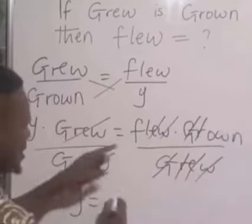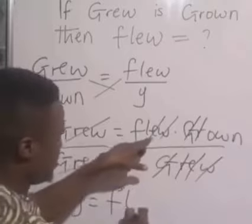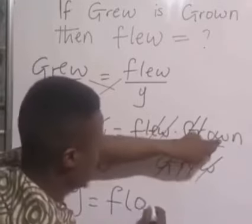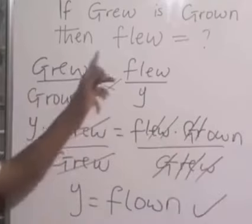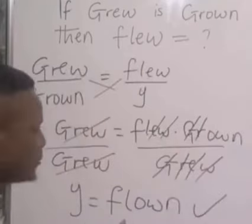So y is f, l, o, w, and n. Therefore, the past participle of flew is flown. Good.